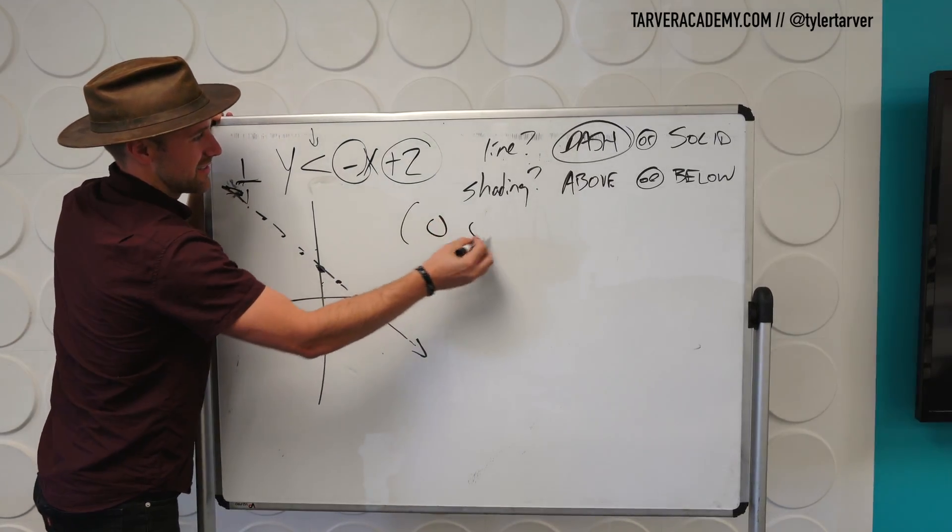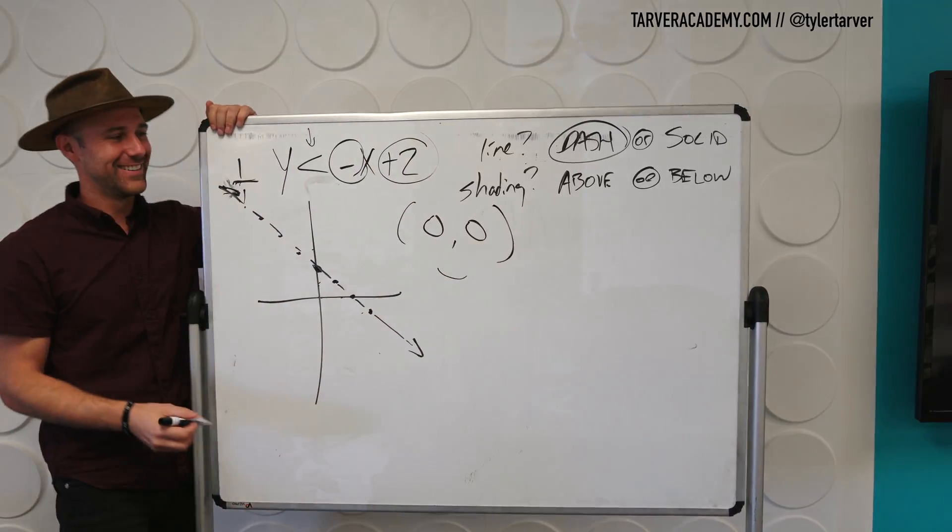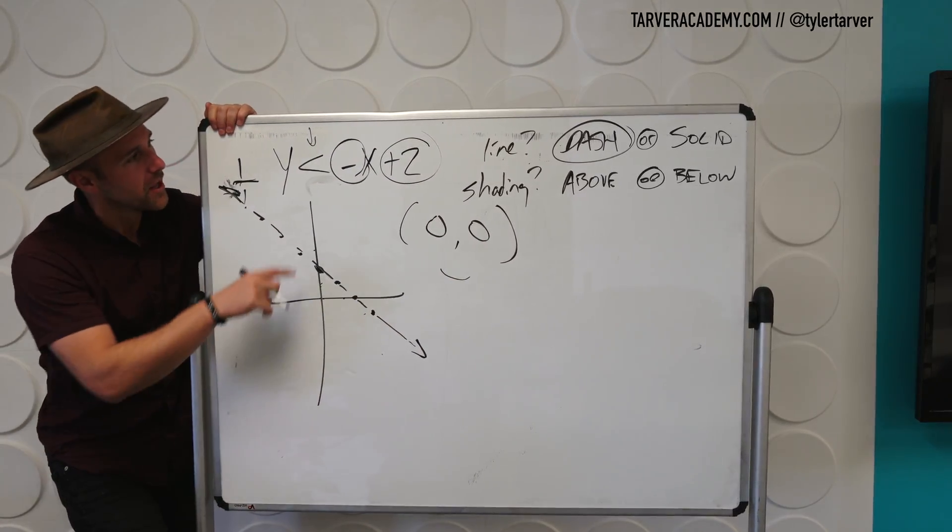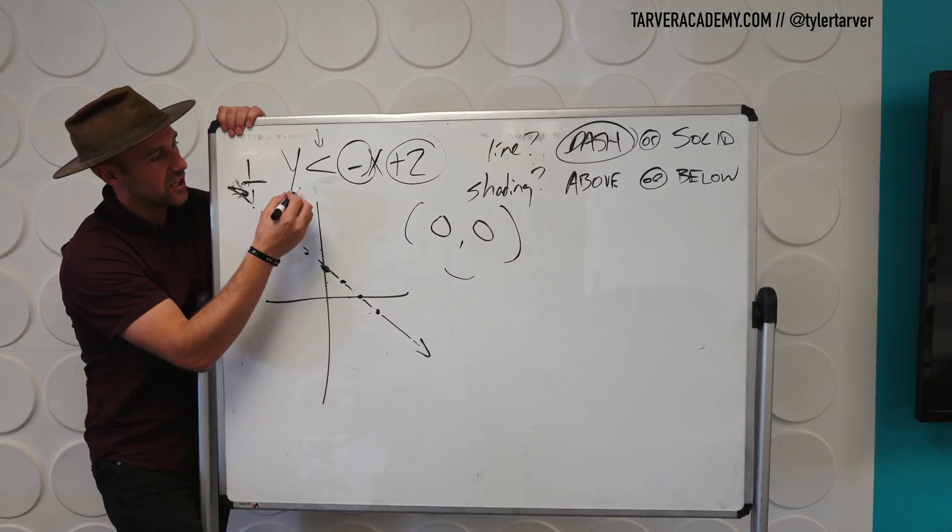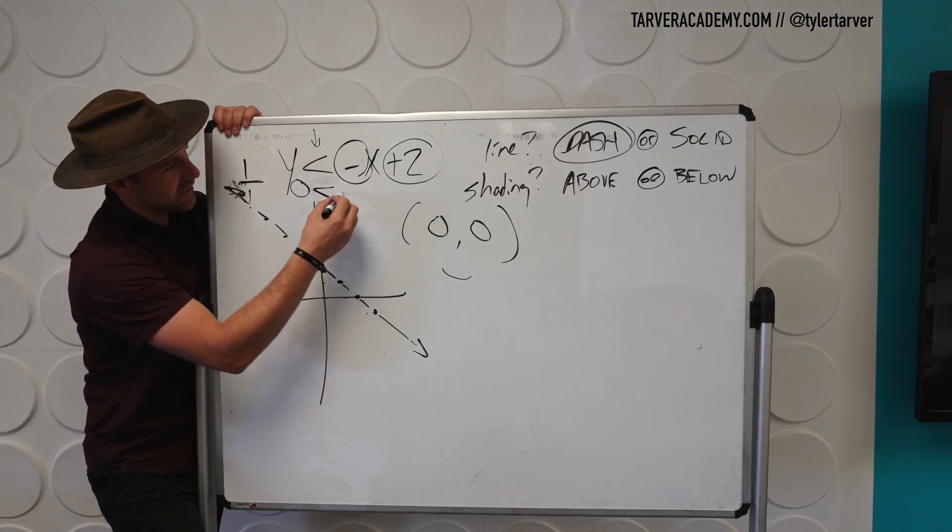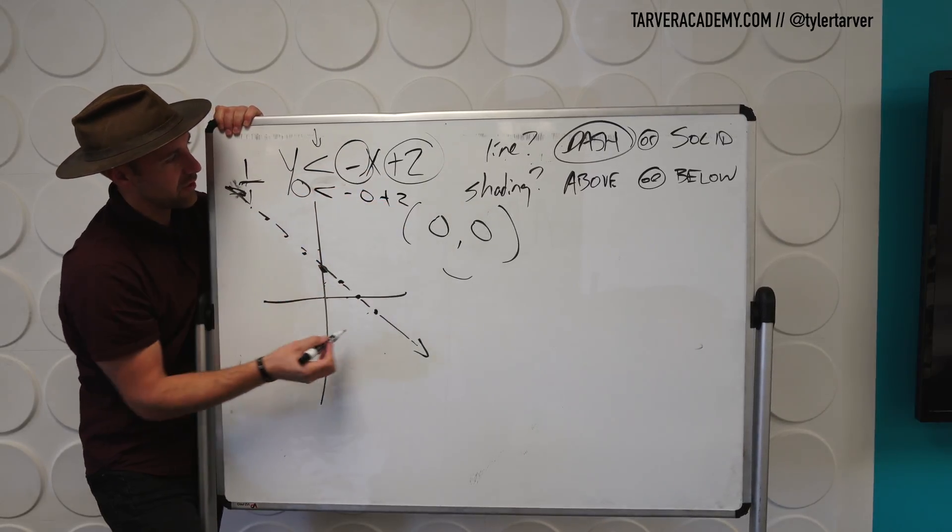0, 0. Okay. So let's plug that in. So 0 goes in for y is less than negative 0 plus 2. Okay?